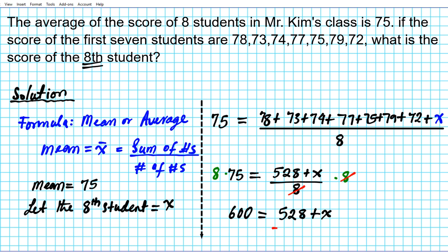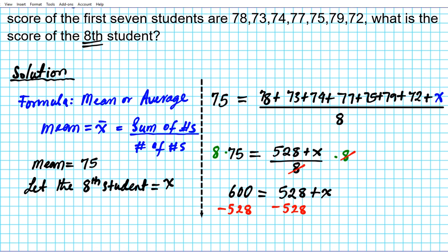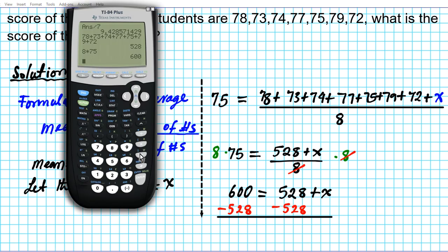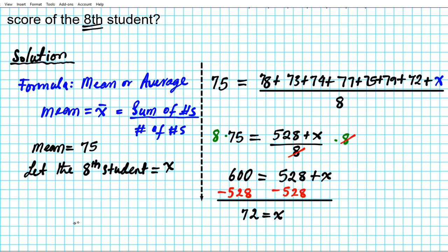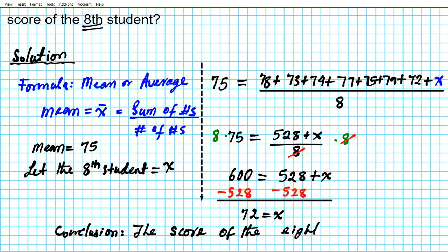Last step: we subtract 528 from both sides of the equation. So 600 minus 528 is 72, which equals X. The score of the 8th student is 72.